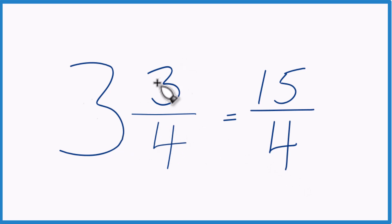3 and 3 fourths, the mixed number, that equals the improper fraction 15 fourths. We say it's improper because the numerator, that's larger than the denominator.